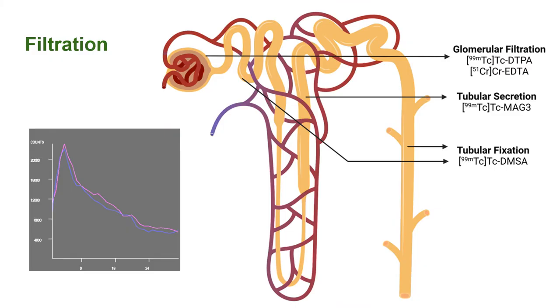The next mechanism of biodistribution is filtration and in this we just look at the kidneys themselves and see if they are working well. So you can look at glomerular filtration, tubular secretion and tubular fixation.